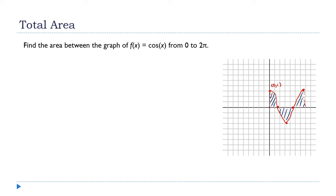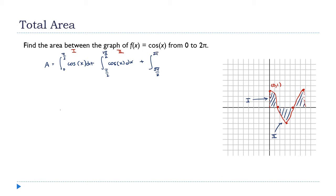Here's how I'll handle it: I split the integral into three parts. The area equals the integral from 0 to π/2 of cos(x) dx — section 1 — plus the integral from π/2 to 3π/2 of cos(x) dx — section 2 — plus the integral from 3π/2 to 2π of cos(x) dx — section 3.